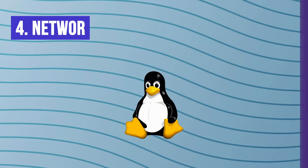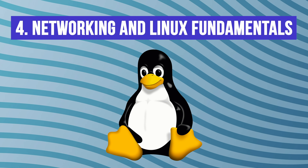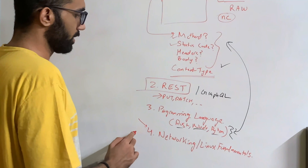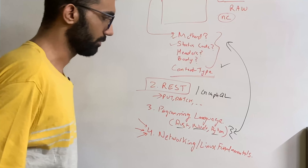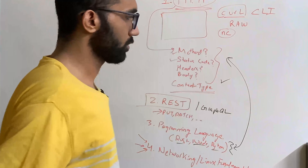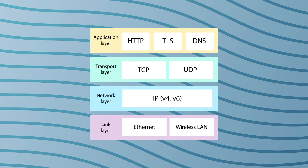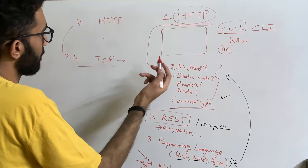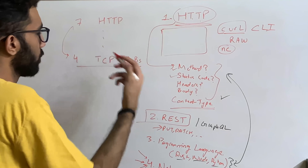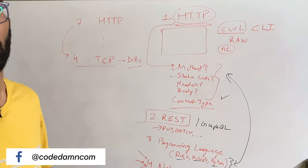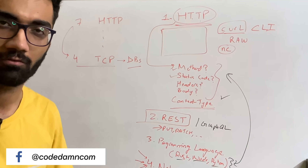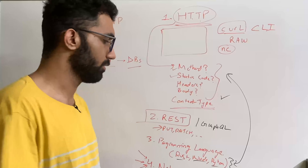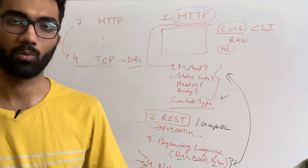Which brings me to my next point: knowing about networking and Linux fundamentals. Networking comes under Linux fundamentals itself. You should be aware of networking and Linux fundamentals as a backend developer because not only will you be working with the HTTP protocol, but in fact you will be going three levels down to layer four, which is the TCP protocol. At this point you would be communicating with databases as well, which have their own custom protocols. You need to understand how networking works, what is TCP, what is HTTP, and the differences between the two — not research-level knowledge, but definitely operating system-level knowledge.